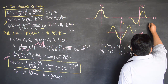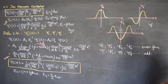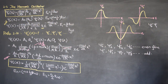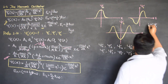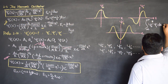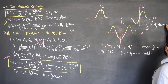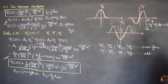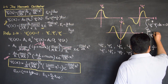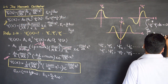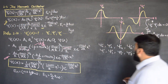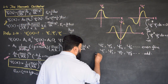Now if I multiply psi_0 with psi_1 and integrate from minus infinity to plus infinity — that is the integral of psi_0 conjugate times psi_1 dx — psi_0 is an even function and psi_1 is an odd function. Integrating an even times an odd function over symmetric limits gives zero. Similarly, integrating psi_1 times psi_2 also gives zero, because odd times even equals zero.